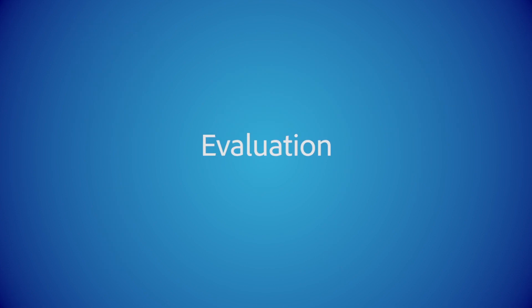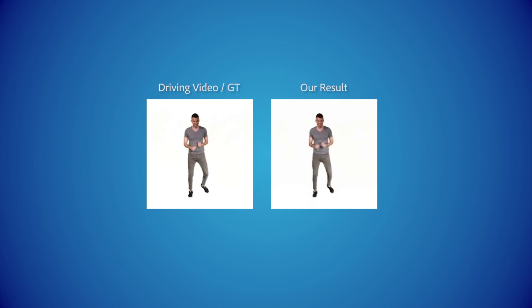We now evaluate our approach using a few experiments. We first quantitatively evaluate our algorithm in a self-reenactment setting, where the driving video is taken from a part of the reference video which is excluded from training. Note that our output resembles the driving video, which is the ground truth in this case. The error is reported in the paper.